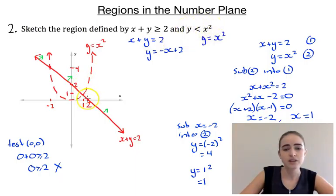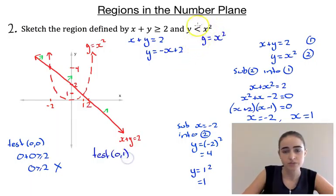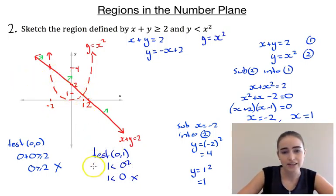Next, we test whether to shade inside or outside the parabola. We can't use (0, 0) this time because it lies on the boundary, so let's pick (0, 1). Substituting into y < x²: 1 < 0² gives 1 < 0, which is false. Since that point is inside the parabola and doesn't satisfy the inequality, we shade outside the parabola.